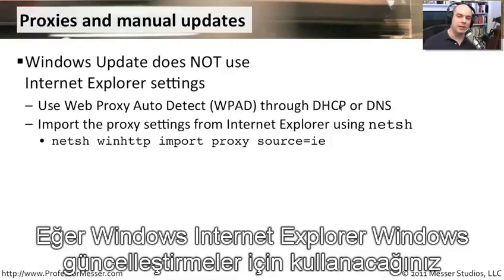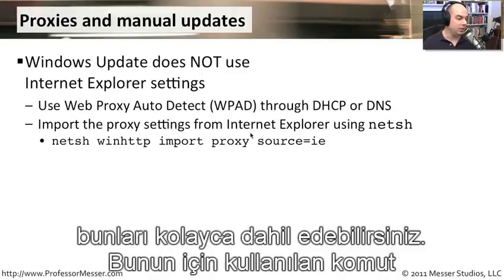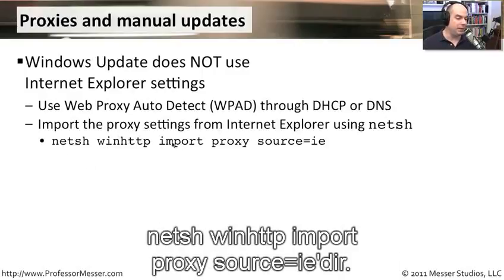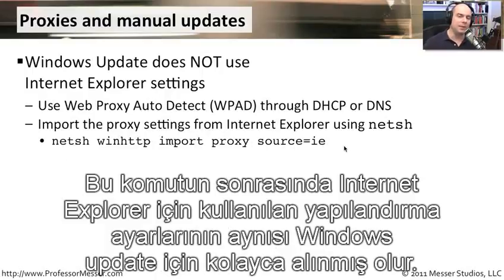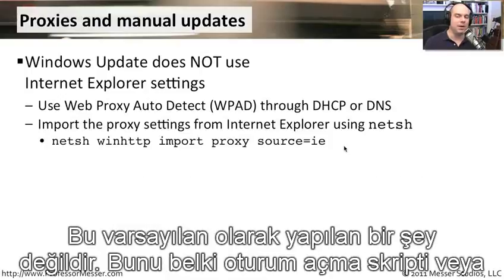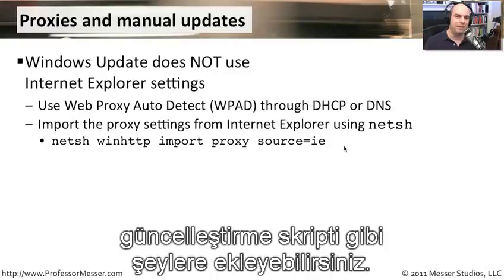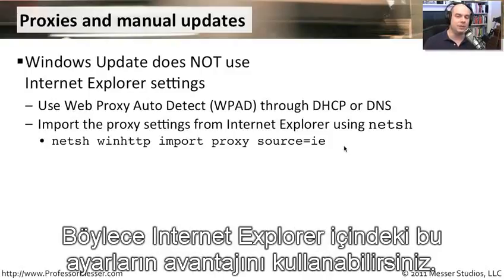If Internet Explorer has the same proxy setting you need for Windows Update, you can simply import it using the command: netsh winhttp import proxy source=ie. This pulls in the same configuration you're using for Internet Explorer. However, that's not done by default — you must add it to a login script or update script to take advantage of those existing Internet Explorer settings.